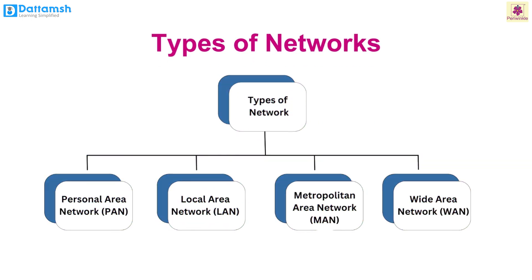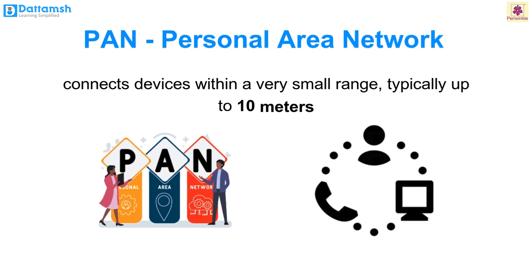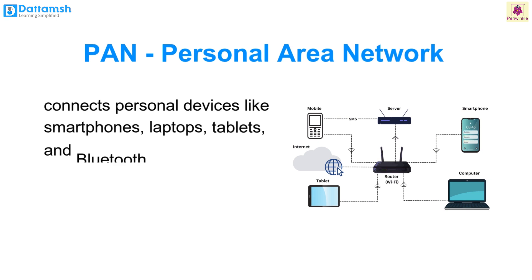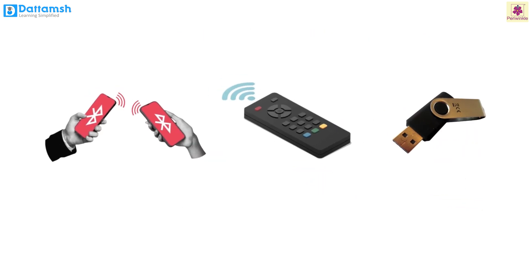There are different types of networks: Personal Area Network (PAN), Local Area Network (LAN), Metropolitan Area Network (MAN), and Wide Area Network (WAN). A Personal Area Network connects devices within a small range, typically up to 10 meters. It is designed for connecting personal devices like smartphones, laptops, tablets and Bluetooth accessories for tasks like transferring files and syncing data. Technologies that enable PAN include Bluetooth, Infrared (wireless) and USB (wired).